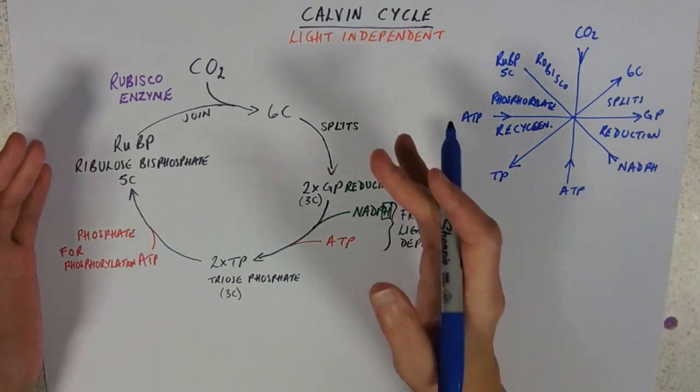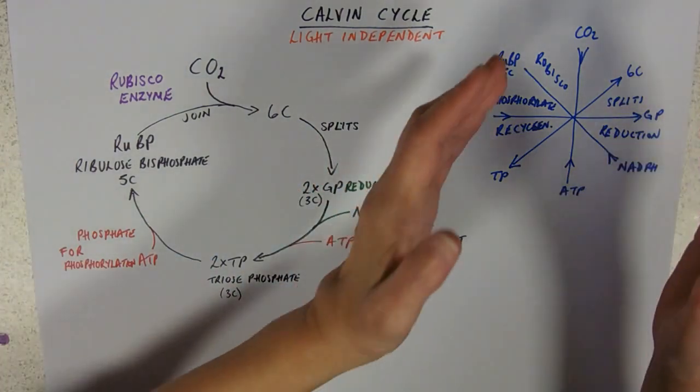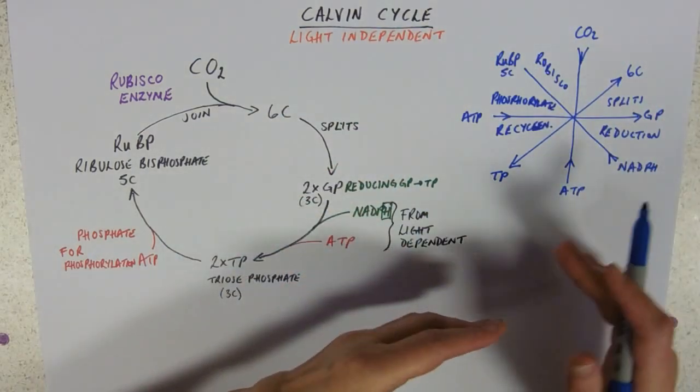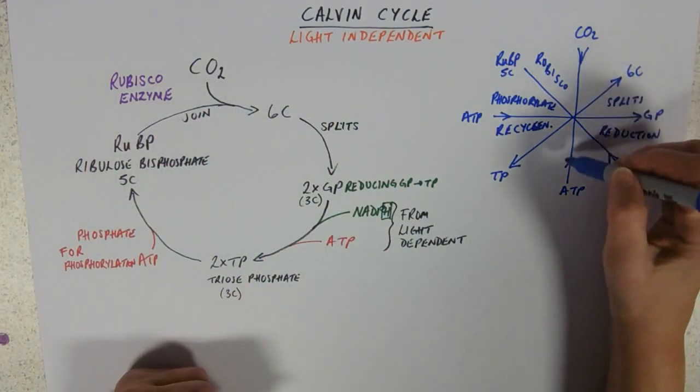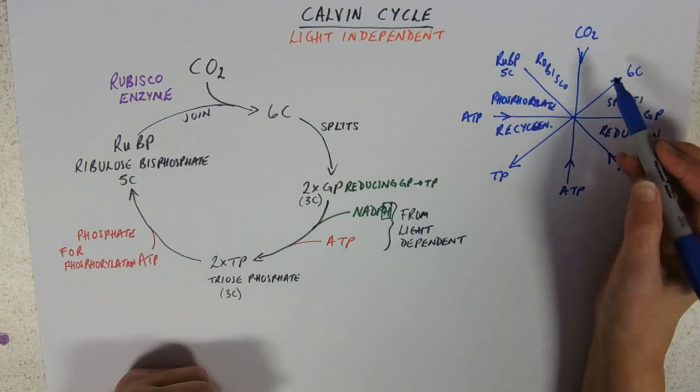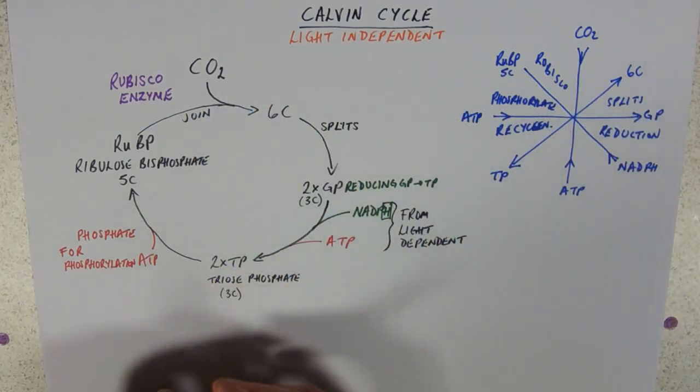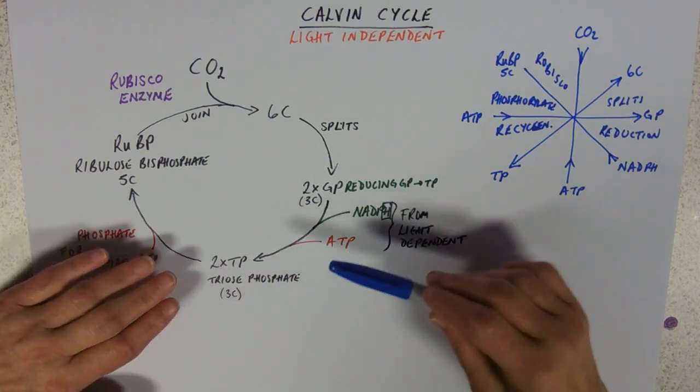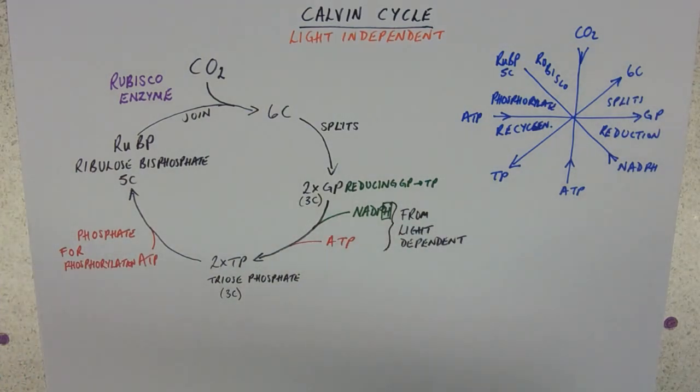Now, obviously, in an exam, what you're going to get is probably this. You're not going to get that. But if you've got that and that's how you have learnt it, then when you come to the exam, you can sketch your star and relate it across. Which might help you to interpret what's going on if you've got anything. So sometimes they'll be missing things off and saying, what's this compound? What's this compound for your AO1 marks?